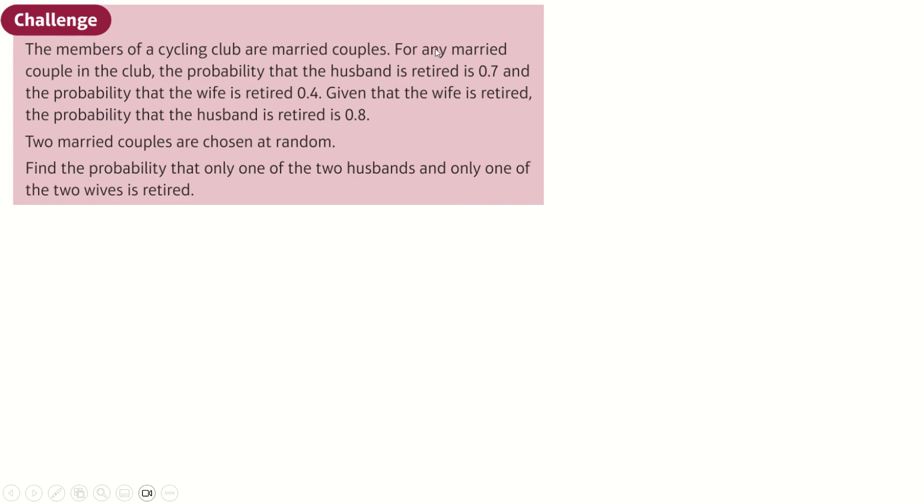Next one, married couples. I decided to do a probability tree here. Probability the wife is retired is 0.4. So, wife retired 0.4. Yes, 0.6. No. It says, if the wife is retired, then the probability the husband is retired is 0.8. So, that's 0.8 there, and that's 0.2 there. The probability the husband is retired is 0.7. What that means is, I can say, this branch times this branch plus this branch times this branch equals 0.7, because that's the two ways the husband can be retired.